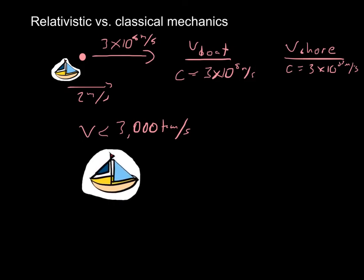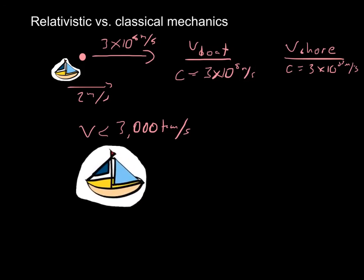This is called length contraction. So anything that's going super, super, super fast actually appears to get a little smaller, at least lengthwise. So it looks like it's kind of compressed.